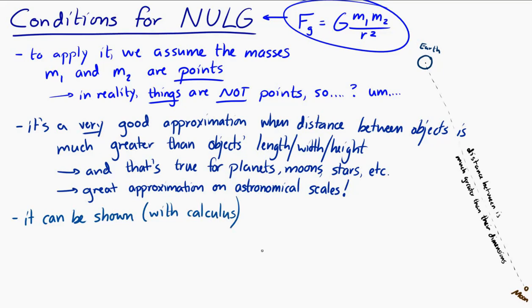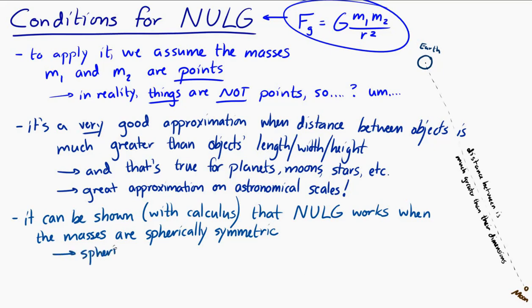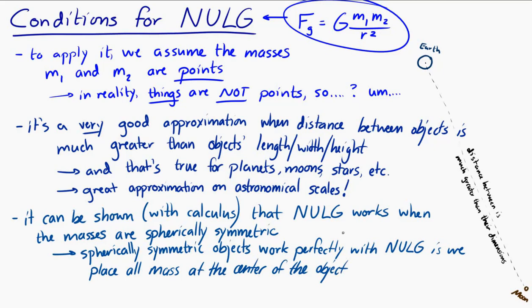Also, turns out that you can show, using math that we're not going to show here, but you can show that Newton's universal law of gravitation also applies perfectly when the masses are spherically symmetric. So if we talk about objects that are spherically symmetric, Newton's universal law of gravitation works perfectly if we assume that the mass is all concentrated at the center of the object. Or in other words, we assume that the mass is just a point object at the center of that object. And fortunately, stars, planets, the Earth, the Moon, are pretty darn close to spherically symmetric. So in many cases, we can assume that, say, the Earth is perfectly spherically symmetric, and we'll get pretty darn close to the reality of the situation.